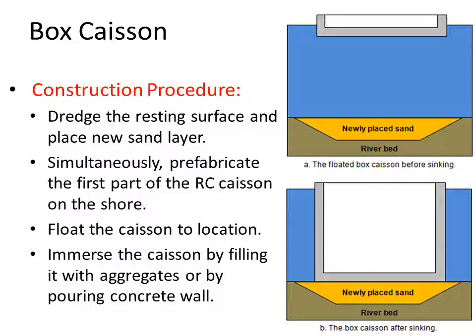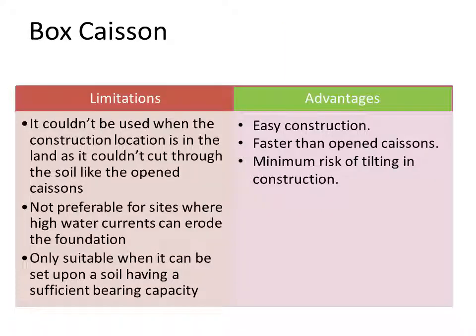Immersion can be achieved by adding weights using concrete, aggregates, or blocks depending on the case. The box caisson has limitations: it cannot be used on dry land, only in the sea or river, and it cannot be used in cases of high water currents, which could erode the foundation. It is an end-bearing system, so it requires soil with sufficient bearing capacity. However, it is very easy and fast to construct with minimal risk of tilting compared to open caissons.